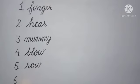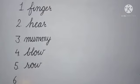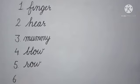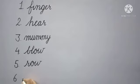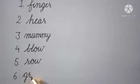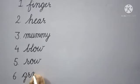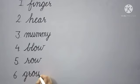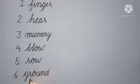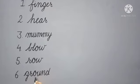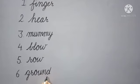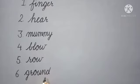Next, number 6: 'ground'. What is the spelling of ground? Tell me kids. G-R-O-U-N-D, ground. Ground means 'maidan' (field/ground).